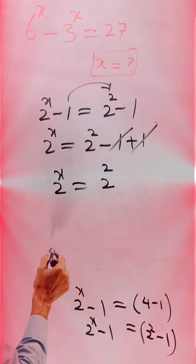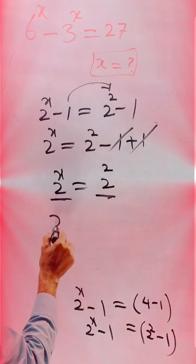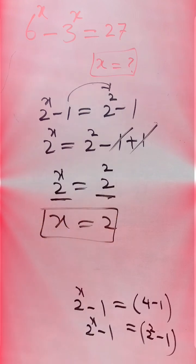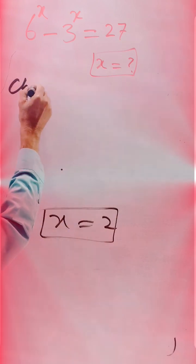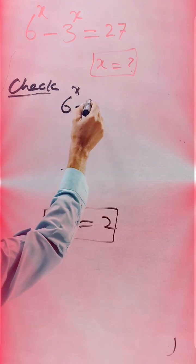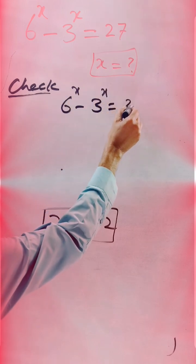2^x is equal to 2 exponent of 2. Bases are same, so we are comparing: x is equal to 2 is the solution of this question. Now let's check: 6^x - 3^x is equal to 27.